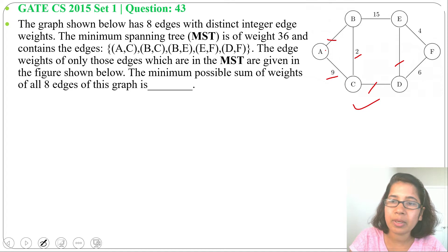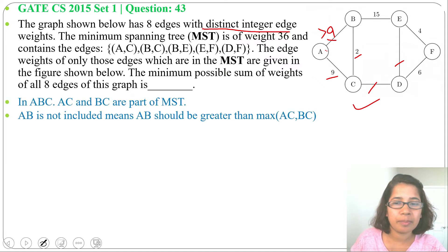If AB will be also 9 then we may choose AB, but here we choose AC and here it is written distinct integer edge weights, means all weights are different. So AB will be greater than 9. Greater than 9 means we may consider it as 10. So minimum AB value will be 10.